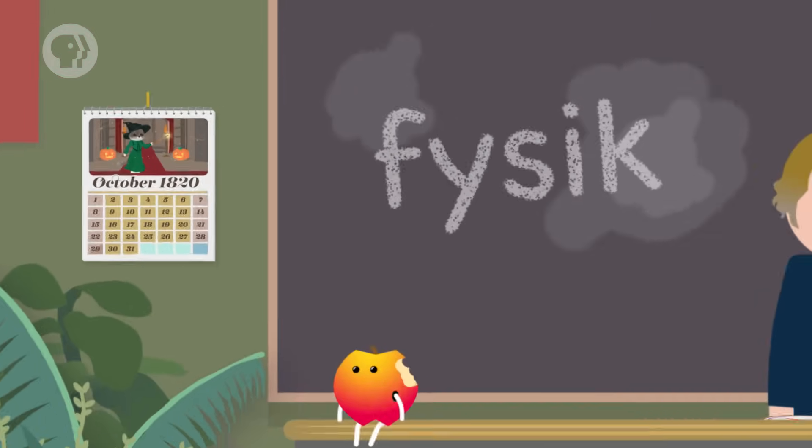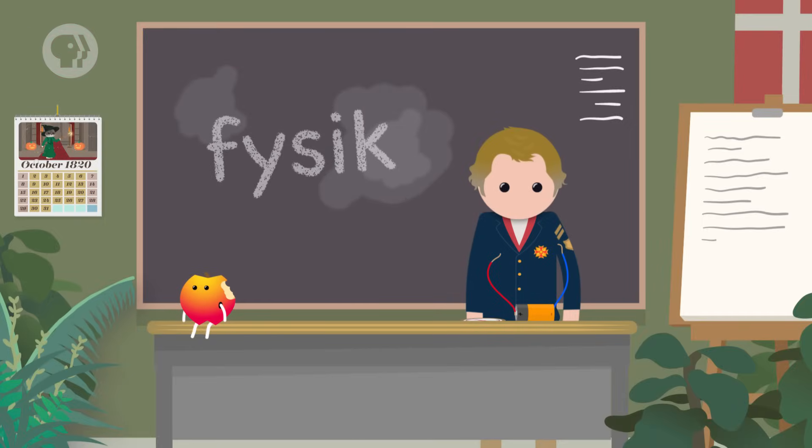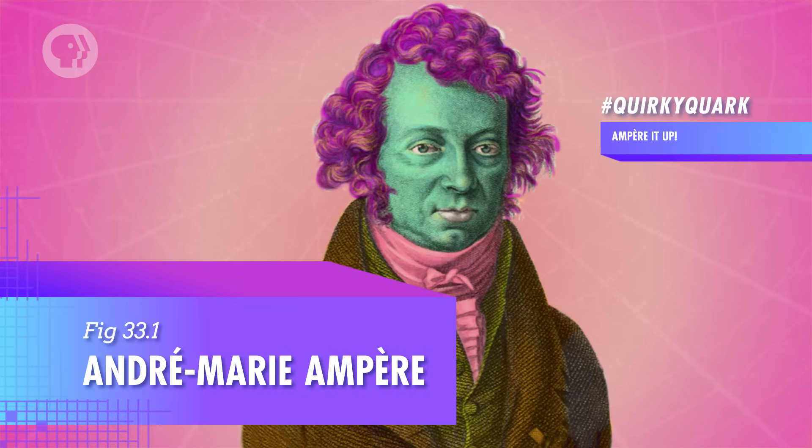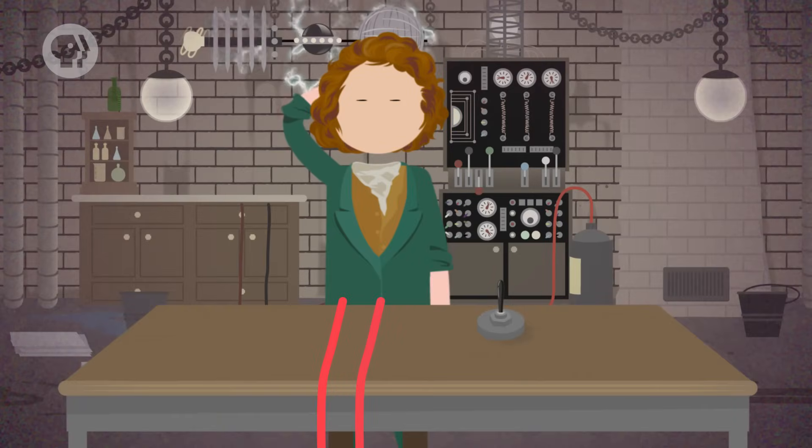It was the autumn of 1820. Hans Christian Ørsted had just discovered the connection between electricity and magnetism. Meanwhile, a French physicist named André-Marie Ampère was experimenting with some wires, trying to learn more about the connection between currents and the magnetic fields they create.